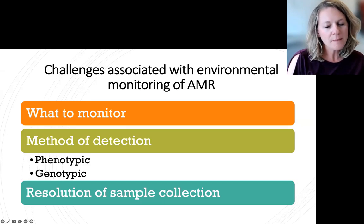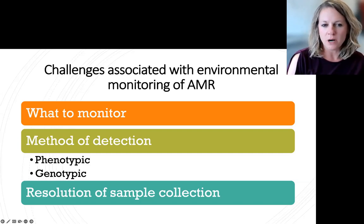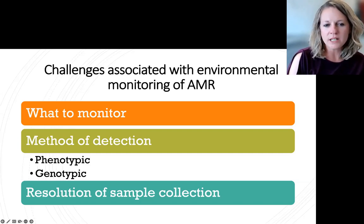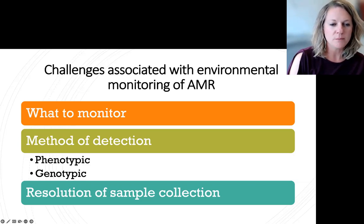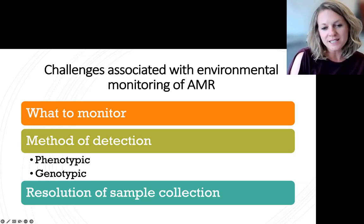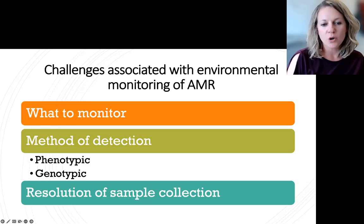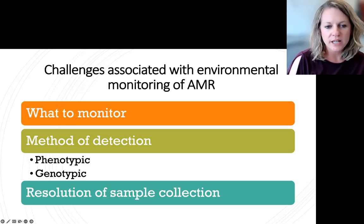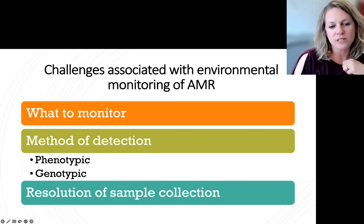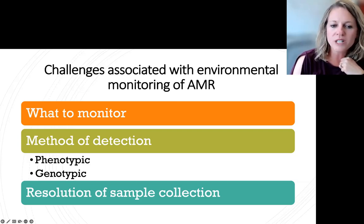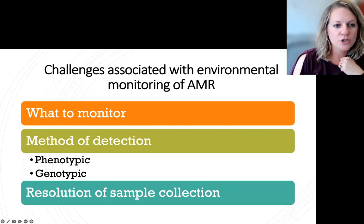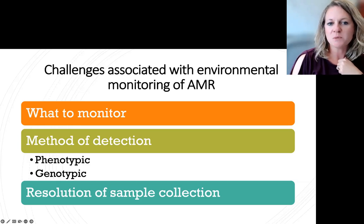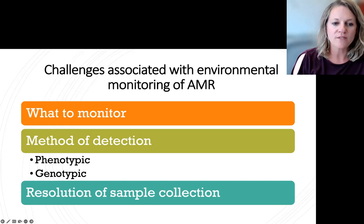When we think about what kind of detection would be able to represent the presence of AMR, we can really look at it in two ways. One is genotypic and one is phenotypic resistance. Phenotypic resistance is when we're actually growing the bacteria that are resistant to different antibiotics on a rich media, so we can see which organisms grow and confirm their resistance through the expression of that resistance.